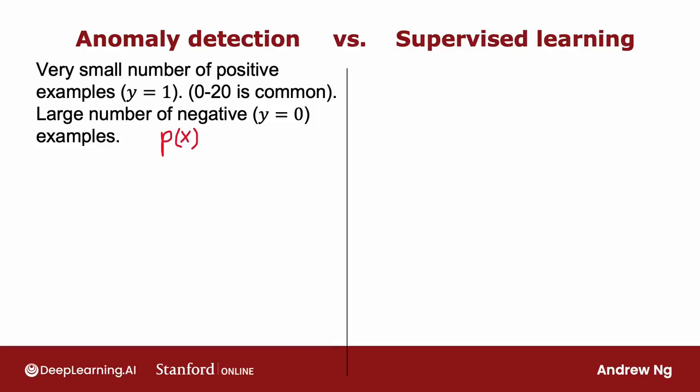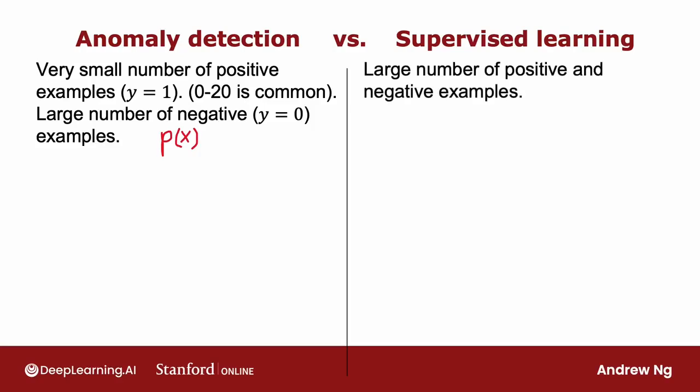In contrast, if you have a larger number of positive and negative examples, then supervised learning might be more applicable. Even if you have only 20 positive training examples, it might be okay to apply a supervised learning algorithm, but it turns out that the way anomaly detection looks at the data set versus the way supervised learning looks at the data set are quite different.